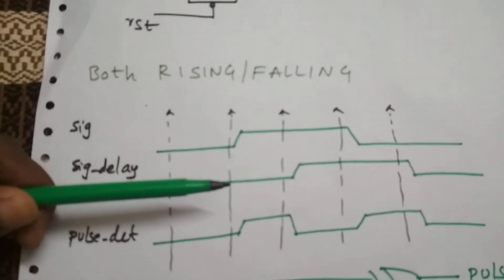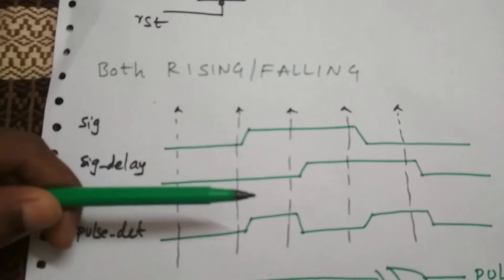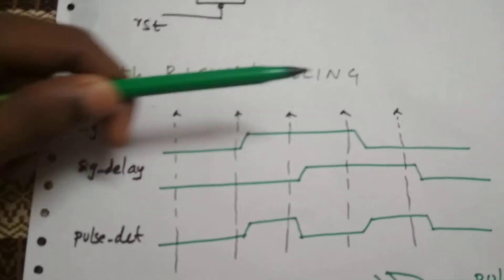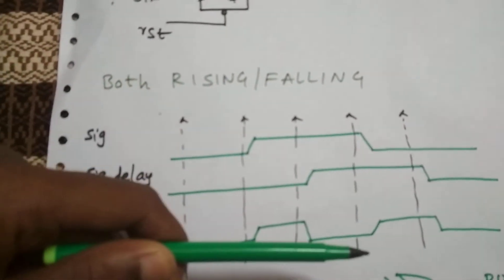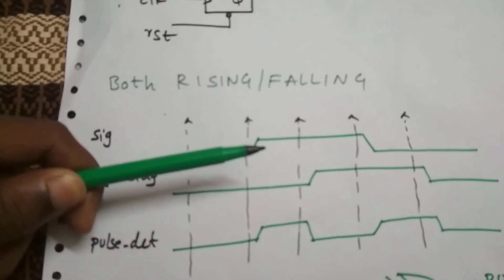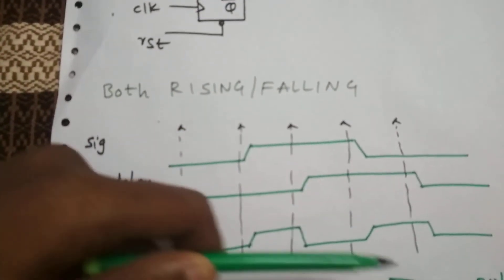As you can see this is our signal we are passing through a flop. We are getting a one clock period delay and after getting these two signals we are XORing it. We are detecting this rising edge and the falling edge of the level. As you can see two pulses are being generated. When it's a rising edge we are getting a pulse. When it's a falling edge we are getting a pulse.